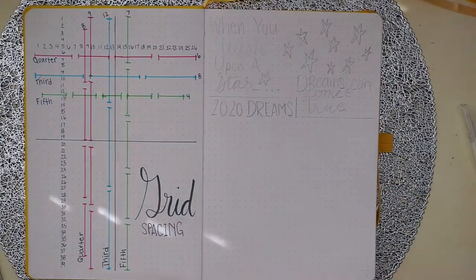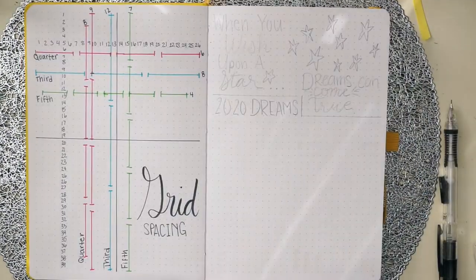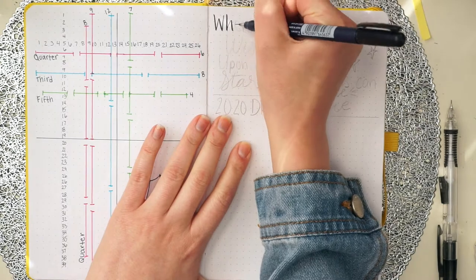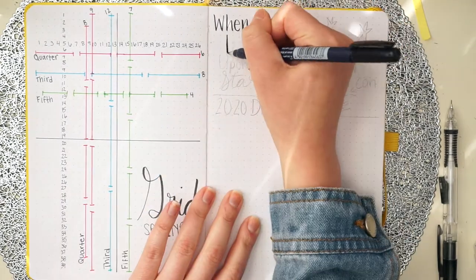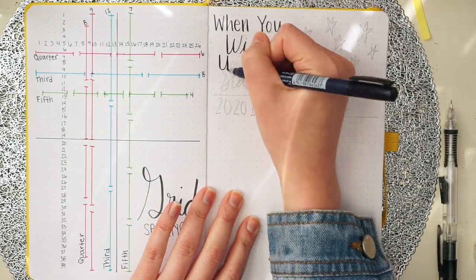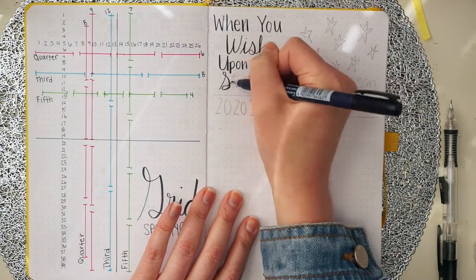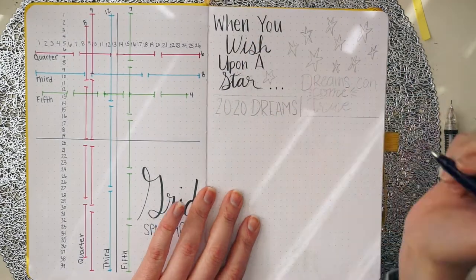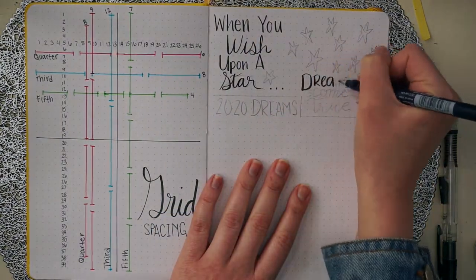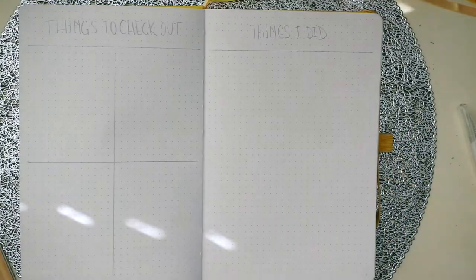This is where technical issues started so I began to do this next spread and it only filmed a little bit of it so you'll see the final result at the end. I really liked this page and I might add something like this to my personal bullet journal. It says when you wish upon a star dreams can come true.